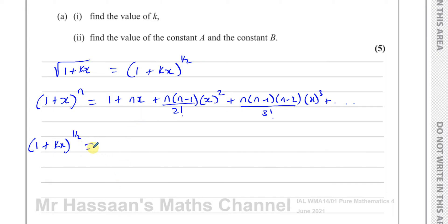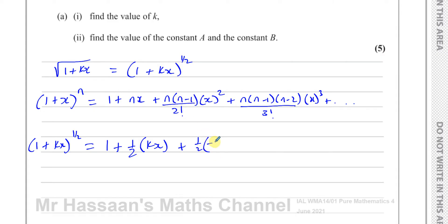So applying this: we have 1, that's fine, plus N times x where N is the power — which is a half — so plus a half times kx. Then for the x squared term: a half times (a half minus 1), which is minus a half, times kx squared, over 2 factorial. And for the x cubed term: a half times (a half minus 1), which is minus a half, times (a half minus 2), which is minus 3 over 2, over 3 factorial, times kx cubed.